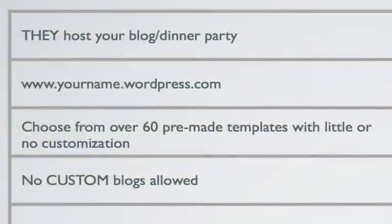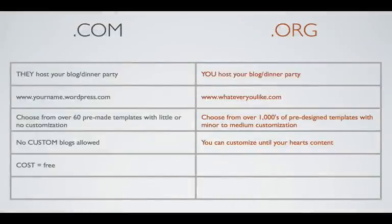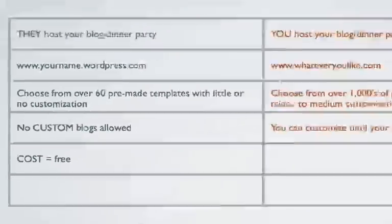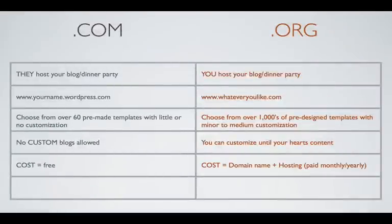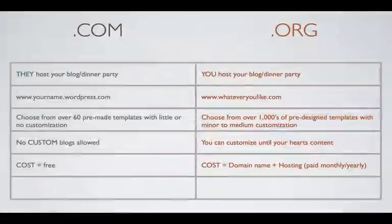.com: no custom blogs allowed. .org: you can customize to your heart's content. .com: the cost — well, you can't beat it, it's free. .org: the cost is simply the domain name and hosting, which you pay monthly or yearly.